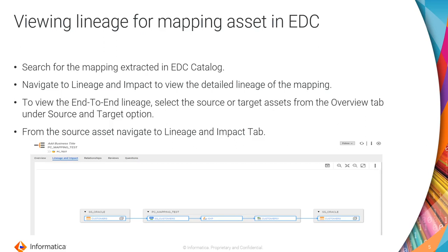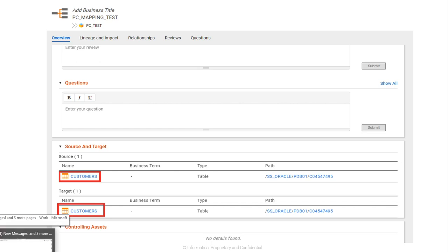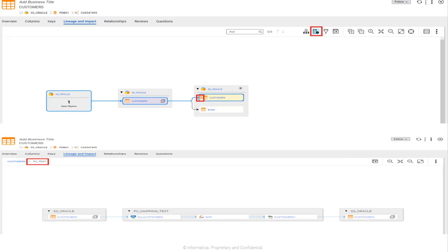Viewing lineage for mapping assets in EDC. Log in to the LDM Catalog UI and search for the mapping extracted in the EDC catalog. Navigate to Lineage and Impact to view the detailed lineage of the mapping. To view the end-to-end lineage, select the source or target asset from the overview tab under the respective source and target section. From the source asset, navigate to Lineage and Impact. The reference screenshot shows lineage from Oracle to PowerCenter mapping and further to the target Oracle Customers table. The highlighted areas show the source and target tables, and the transformation logic is highlighted with an orange circle in the lineage diagram.